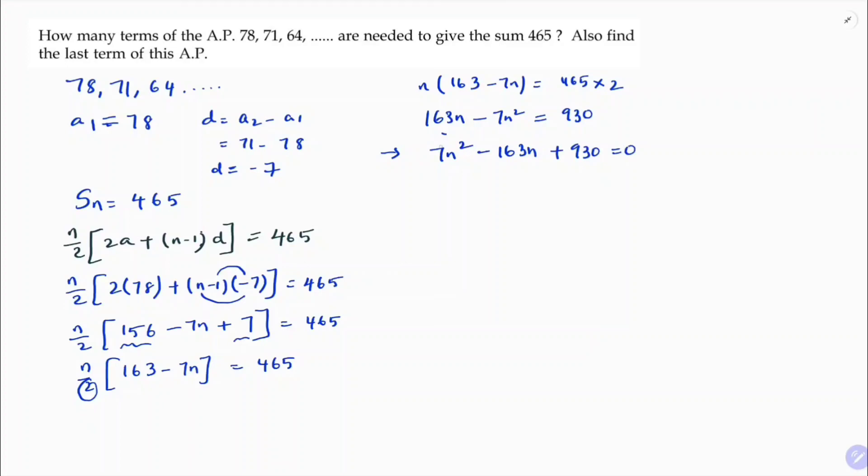Now I need to factorize. So here 7 into 930. I will do prime factors here like 2, 465, next 3, 155, and again 5, next 5, 31. Now I need to get 163. So here 7 times 2, 14. 14 times 5 is 70 and 31 into 3 is 93. 70 and 93 is 163.